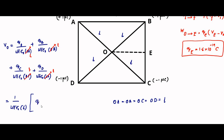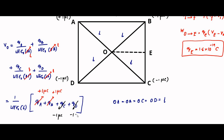Then we have Q_A plus Q_B plus Q_C plus Q_D. Now Q_A and Q_B are each plus 1 micro coulomb, Q_C is minus 1 micro coulomb, and Q_D is also minus 1 micro coulomb. So we have 2 micro coulomb minus 2 micro coulomb — the net is 0. So the net electric potential at point O due to the 4 charges placed at A, B, C, and D is equal to 0 volt.